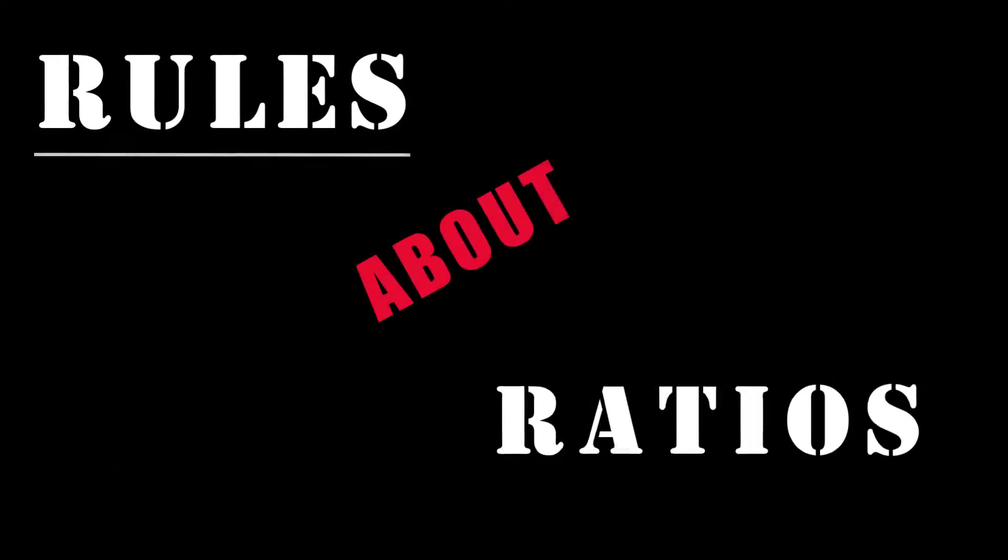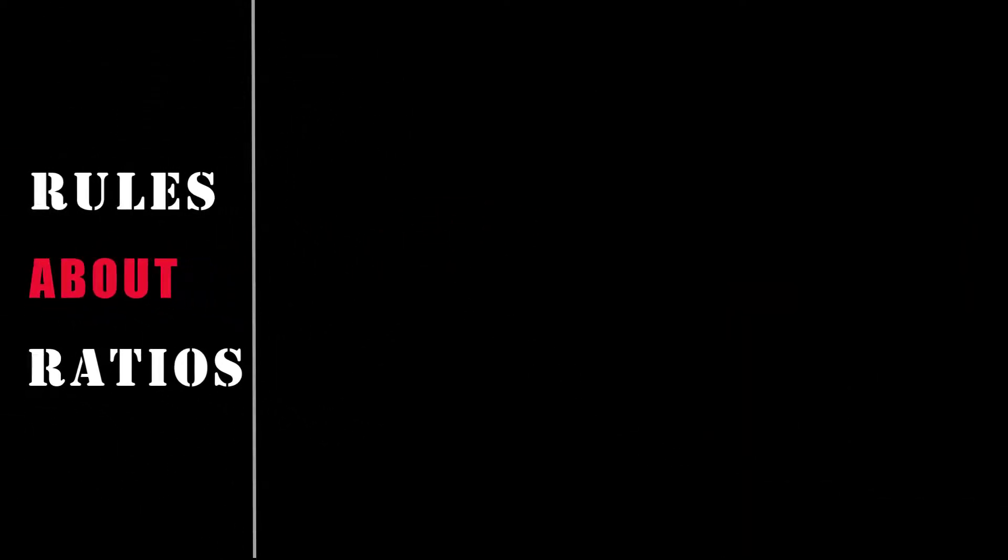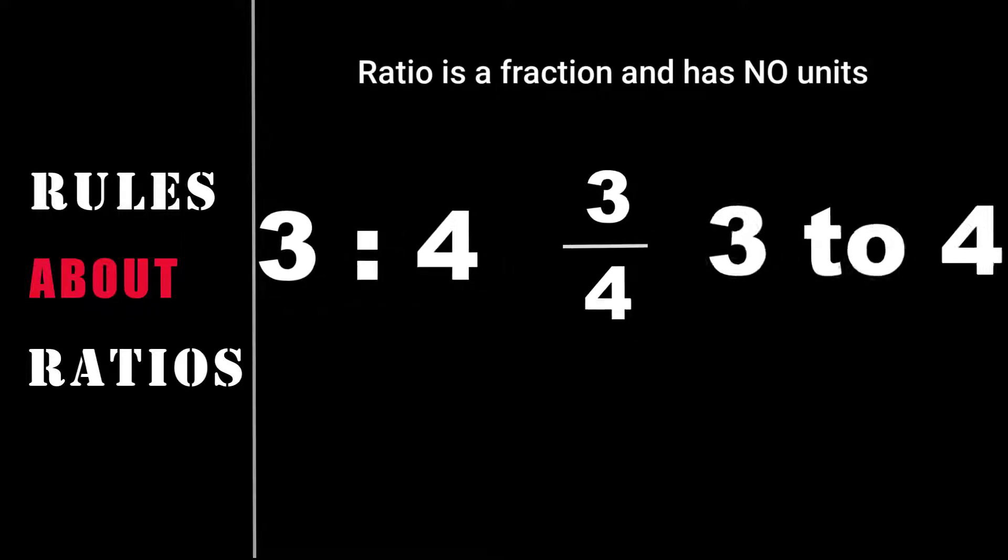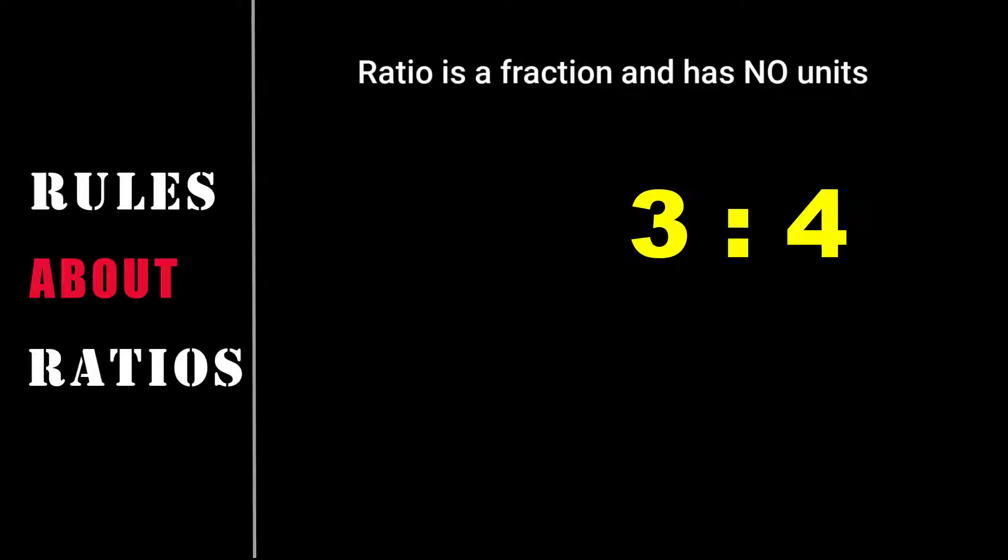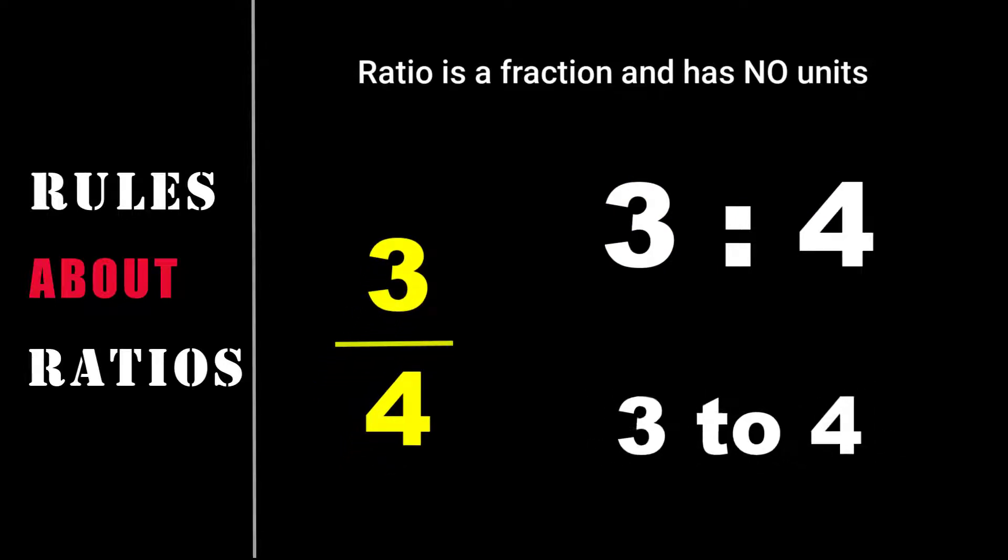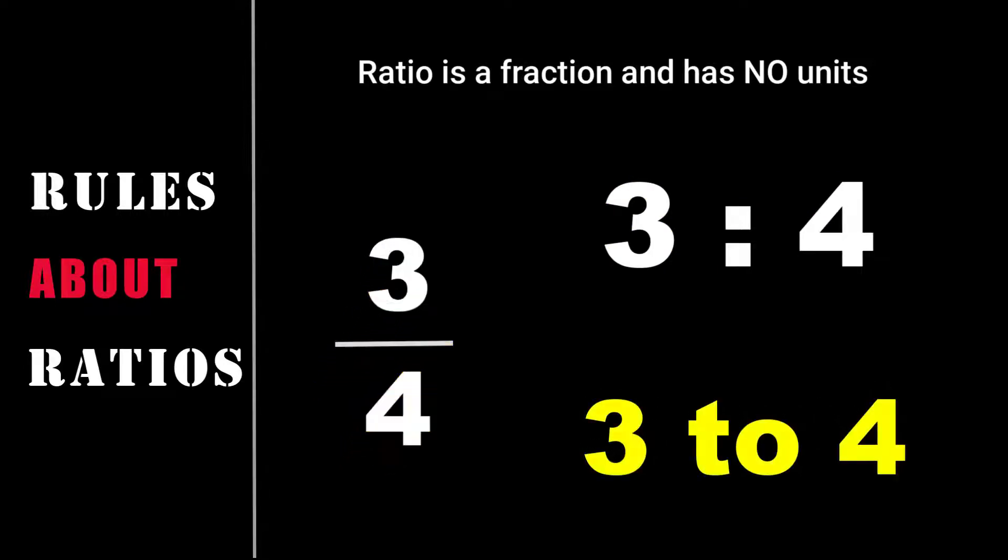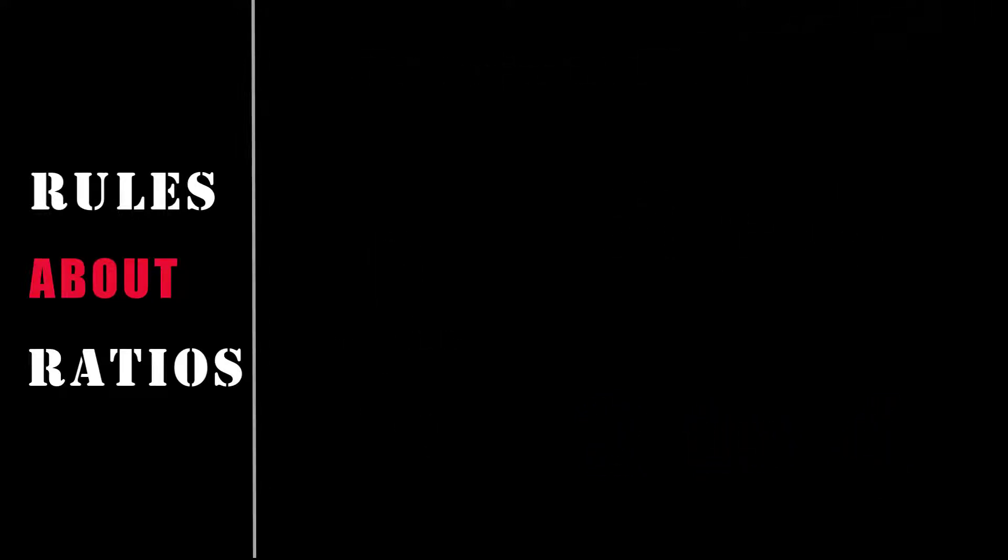Ratio has a certain set of rules. Rule number 1: Ratio is a fraction and it has no units. The most common way of representing ratios are by using a colon, say for example 3 is to 4, or in the fractional form 3 by 4, or by using the word to, that is first quantity to the second quantity, 3 to 4.